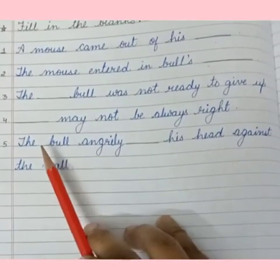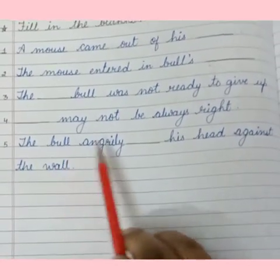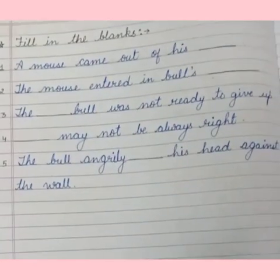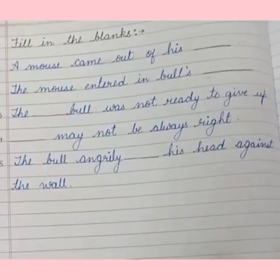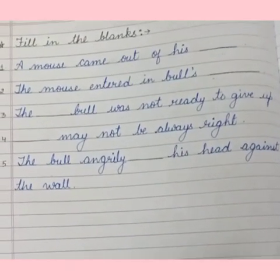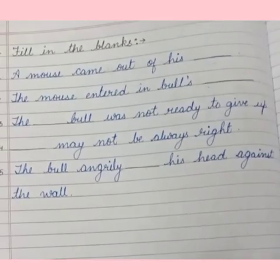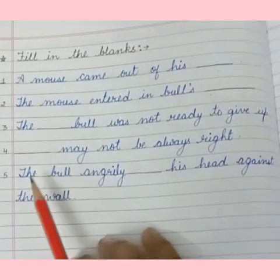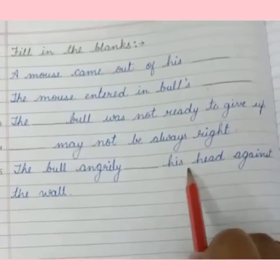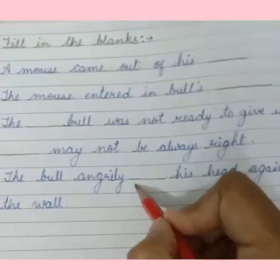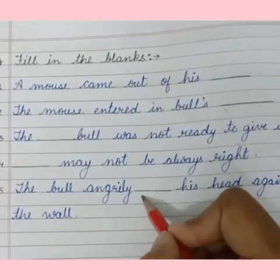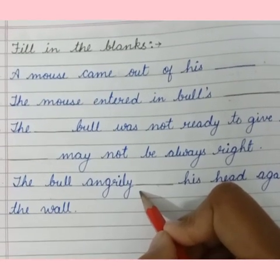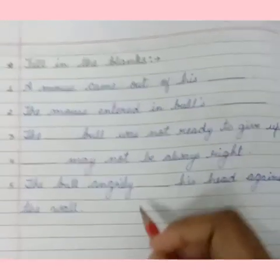Now come to the last sentence: The bull angrily blank his head against the wall. When the bull was angrily in rage, how did he hit his head against the wall? He dashed it — so we write 'dashed.' D-A-S-H-E-D. The angry bull dashed his head against the wall.